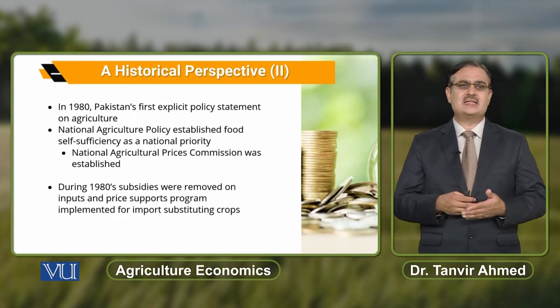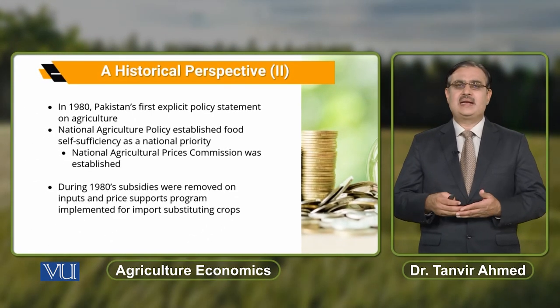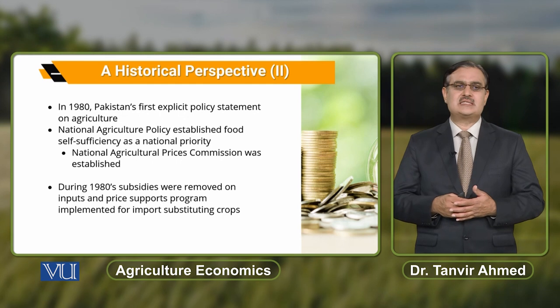In the 1980s, the first explicit policy statement on the agriculture sector was made. The National Agriculture Policy established food self-sufficiency as a national policy. The national priority was that there should be food self-sufficiency, and the National Agricultural Prices Commission was established.